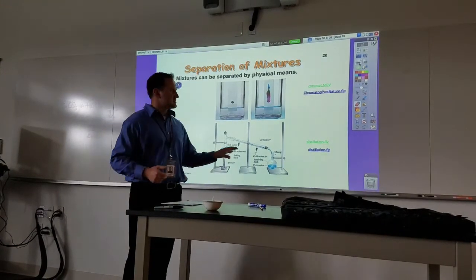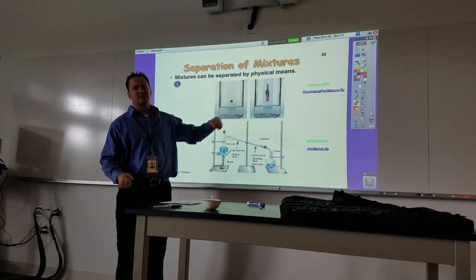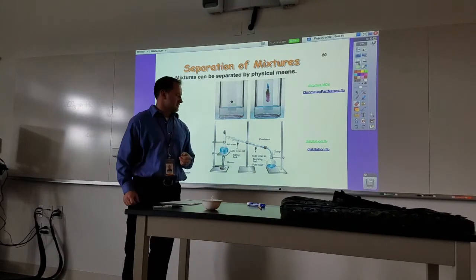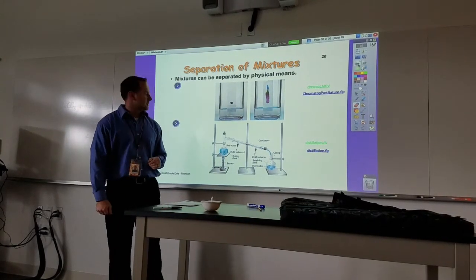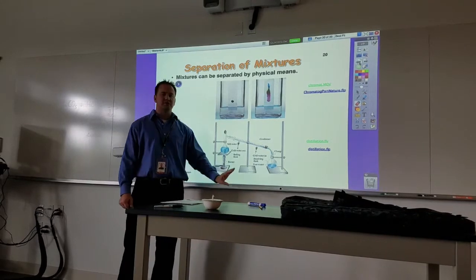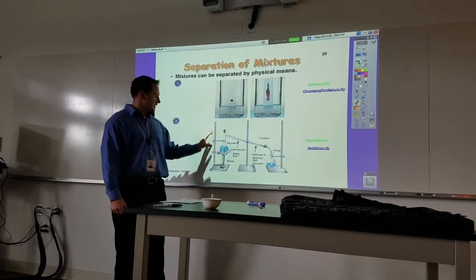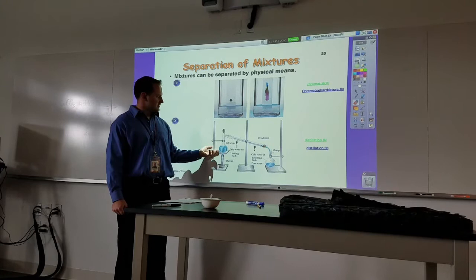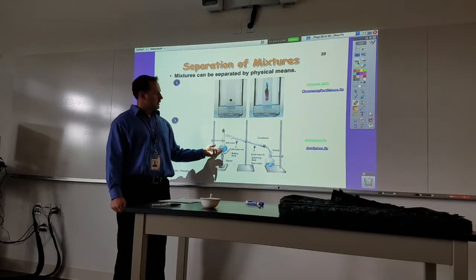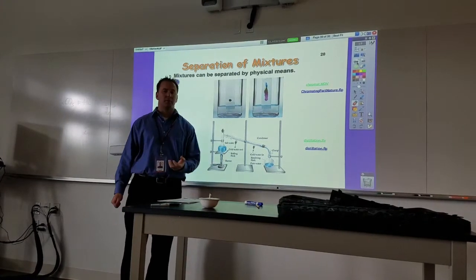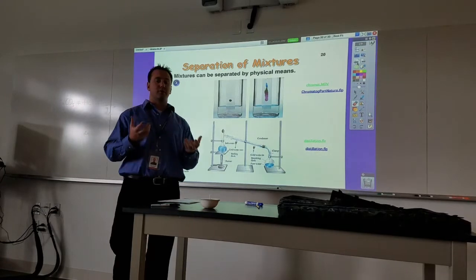That's chromatography—separating a mixture based on its affinity for one of two phases. Another way we can separate a mixture is called distillation. This is a picture of a distillation setup. The apparatus has a mixture that can be separated based on boiling point if you have two substances with different boiling points.